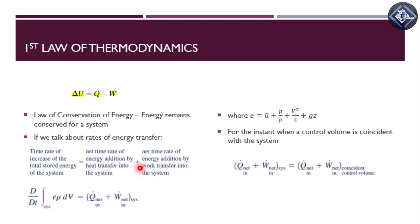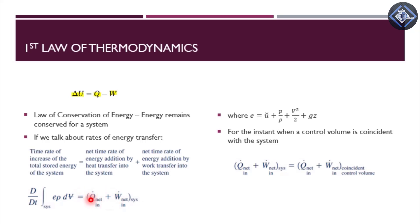Since we are equating with work transfer into the system, work done on the system is taken as positive. Here, E represents the total stored energy of the system, Q-dot net in is the time rate of energy addition by heat into the system, and W-dot net in is the work done on the system. So heat transferred into the system and work done on the system are both taken as positive.